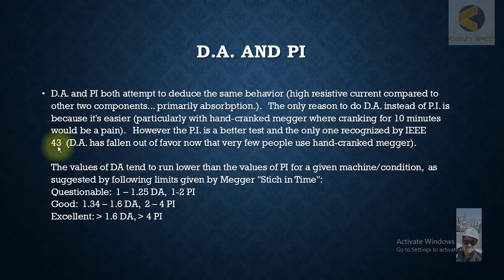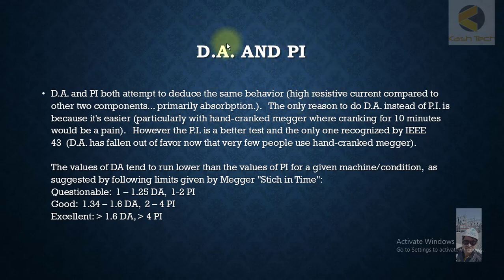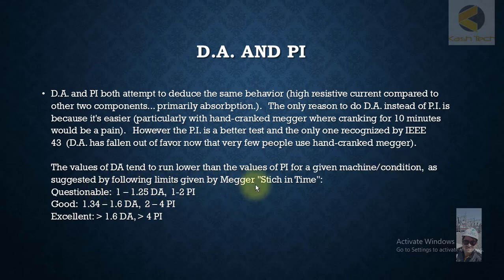DA has fallen out of favor now that very few people use hand crank meggers. IEEE supports basically the testing of PI; DA is not acceptable for them. The values of DA tend to run lower than the values of PI for a given machine or condition, as suggested by the following limits.